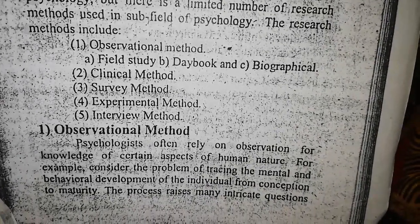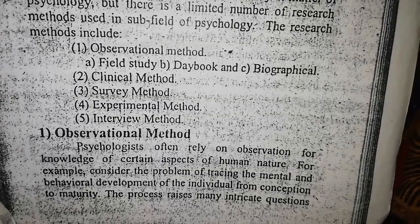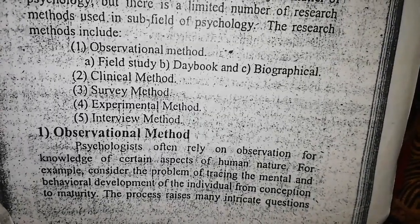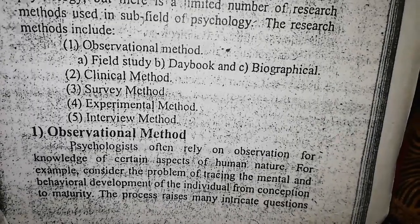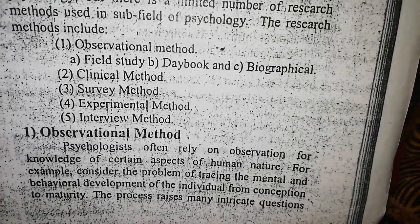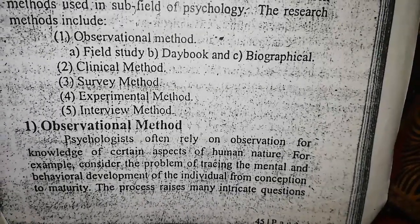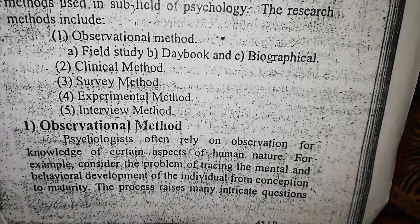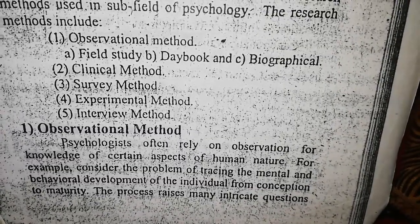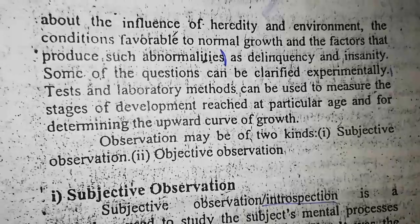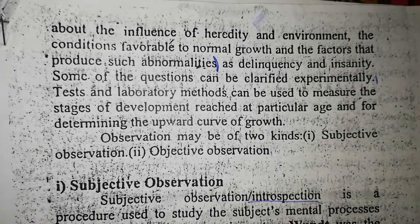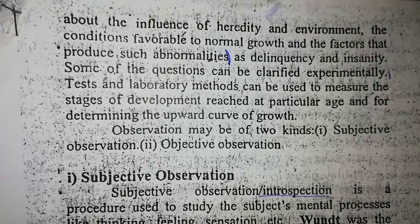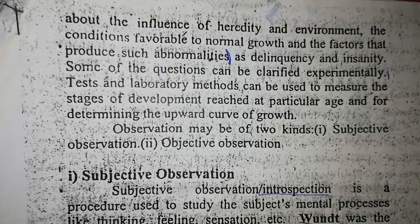Observational method: psychologists often rely on observation for knowledge of certain aspects of human nature. Consider the problem of tracing the mental and behavioral development of the individual from conception to maturity. This process raises many intricate questions about the influence of heredity and environment, the conditions favorable to normal growth, and the factors that produce abnormalities.